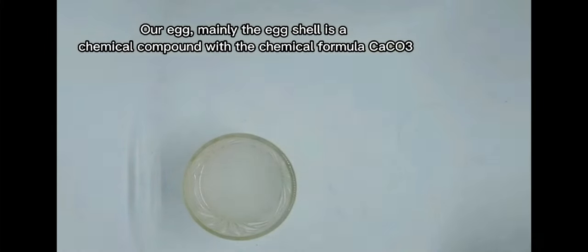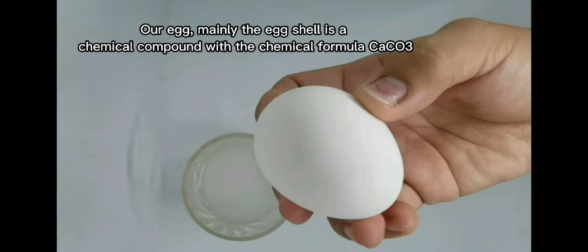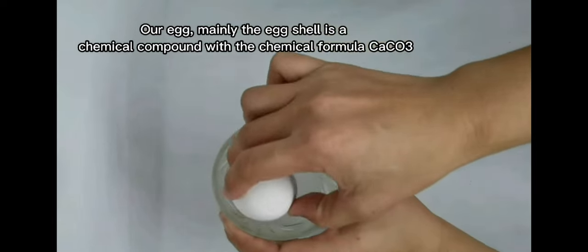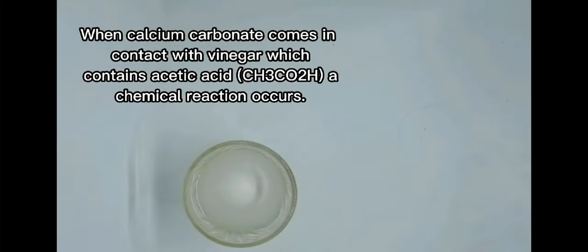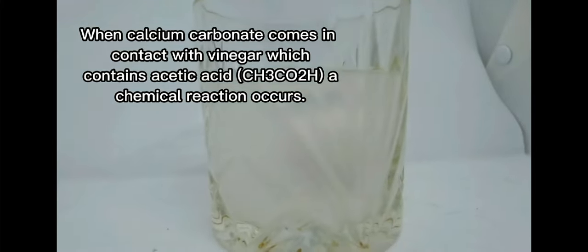Our egg, mainly the eggshell, is a chemical compound with the chemical formula CaCO3. When calcium carbonate comes in contact with vinegar which contains acetic acid, a chemical reaction occurs.